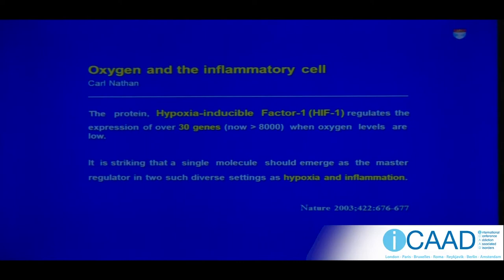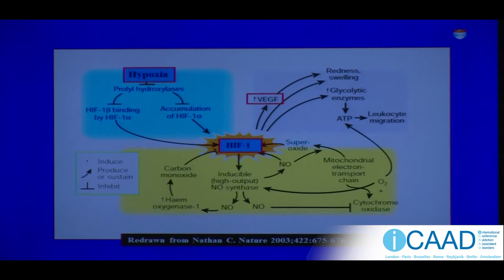Medical students are being taught about the importance of blood levels and haemoglobin saturation levels. They are not being taught that oxygen is actually the prime controller of most of our important genes. As Carl Nathan says, it's striking that a single molecule should emerge as the master regulator in two such diverse settings as hypoxia — lack of oxygen — and inflammation. Those two factors are actually related.